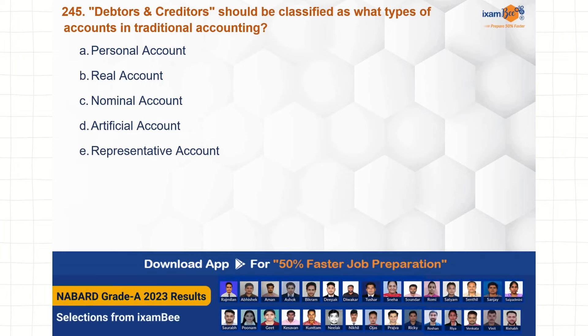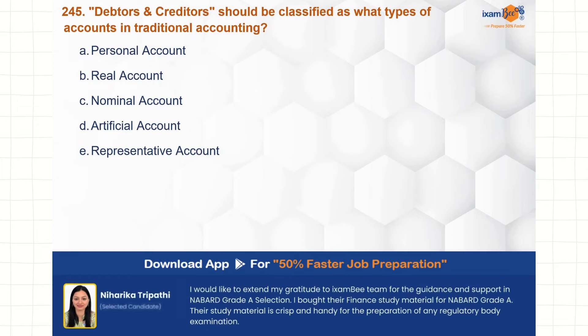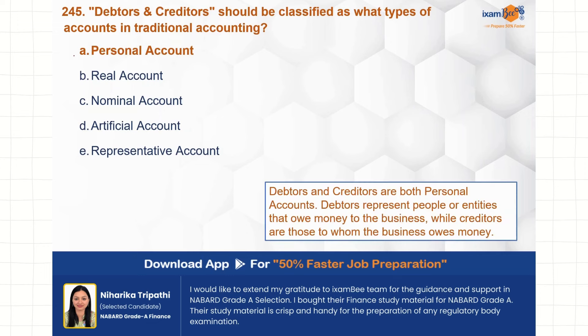Debtors and creditors should be classified as what type of accounts in traditional accounting? This question is related to basics of accounting. Traditional accounting ki ek approach hoti hai — modern or traditional. Traditional approach bhoat saare classification karta hai accounts ka. Debtor aur creditor aapke personal nature ke account hoti hai, so personal accounts is the correct choice here.